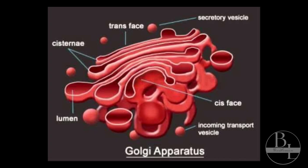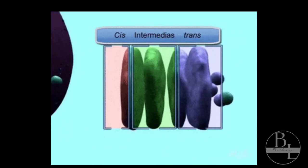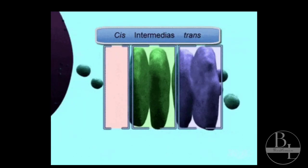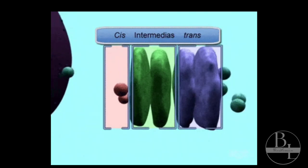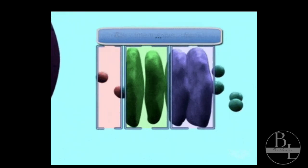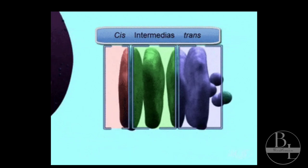The Golgi sacks show a specific orientation in the cell. Each cisterna has a forming or cis phase and maturing, meaning trans phase. Note that cis means on the same side and trans means the opposite side.